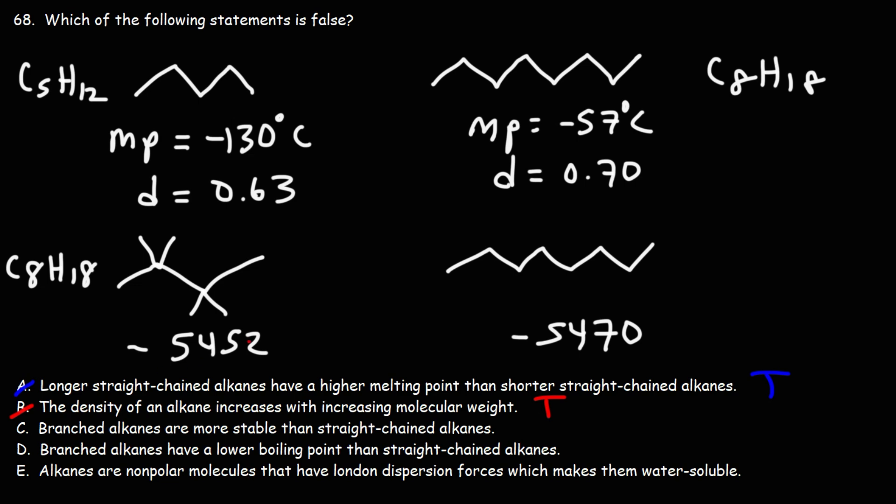Because the branched alkane has a lower absolute value of the heat of combustion than the straight-chain alkane, we could say that C is a true statement.